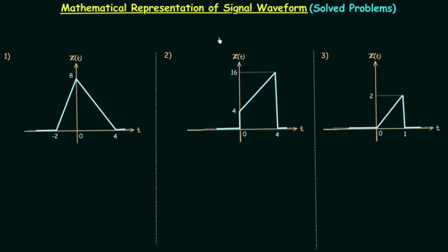In the last lecture I explained how we can obtain the mathematical representation of signal waveforms following a shortcut method. Now regarding this shortcut method I want to make one thing very clear: we use this shortcut method to obtain the mathematical representation of any signal waveform related to ramp and step.